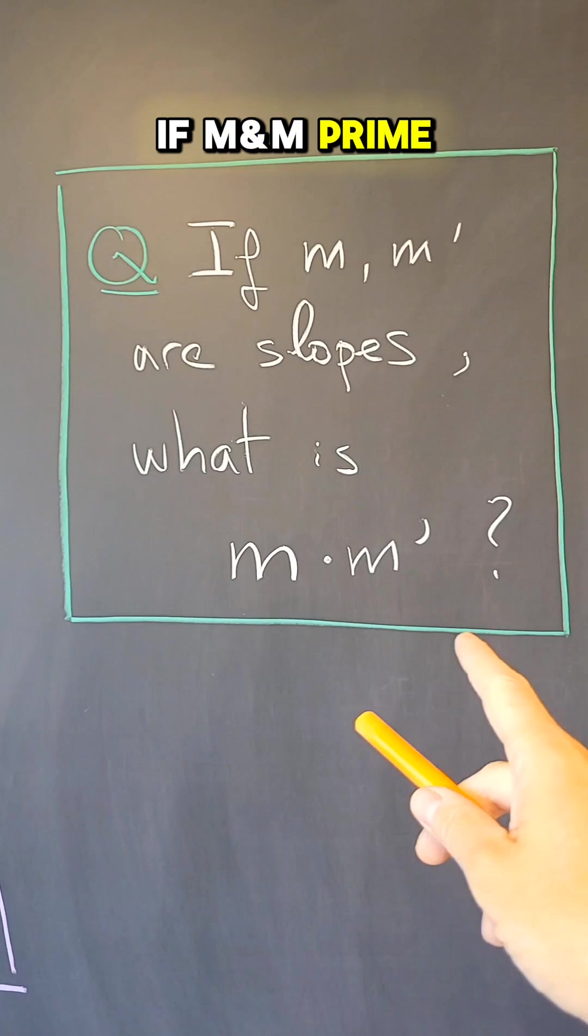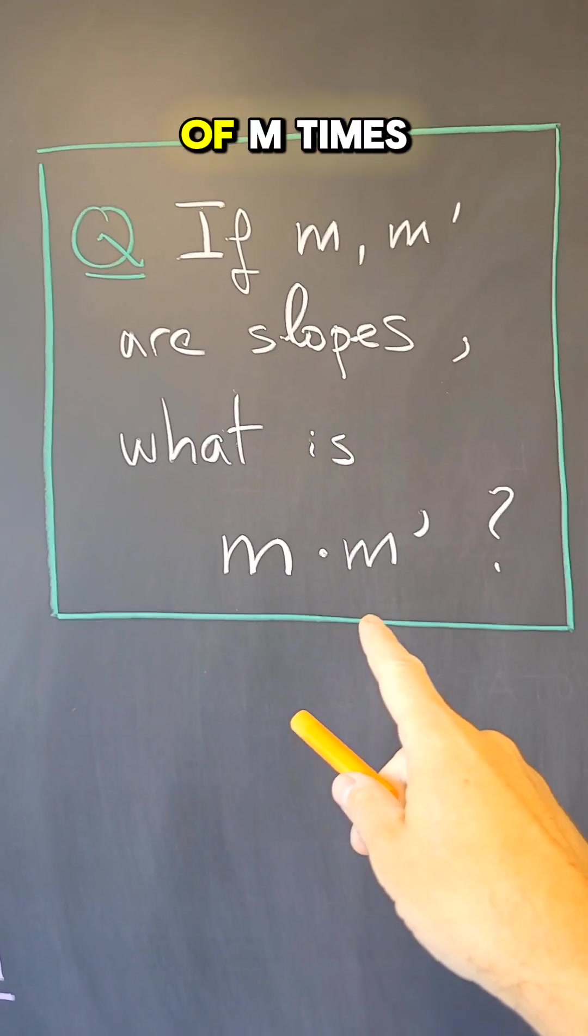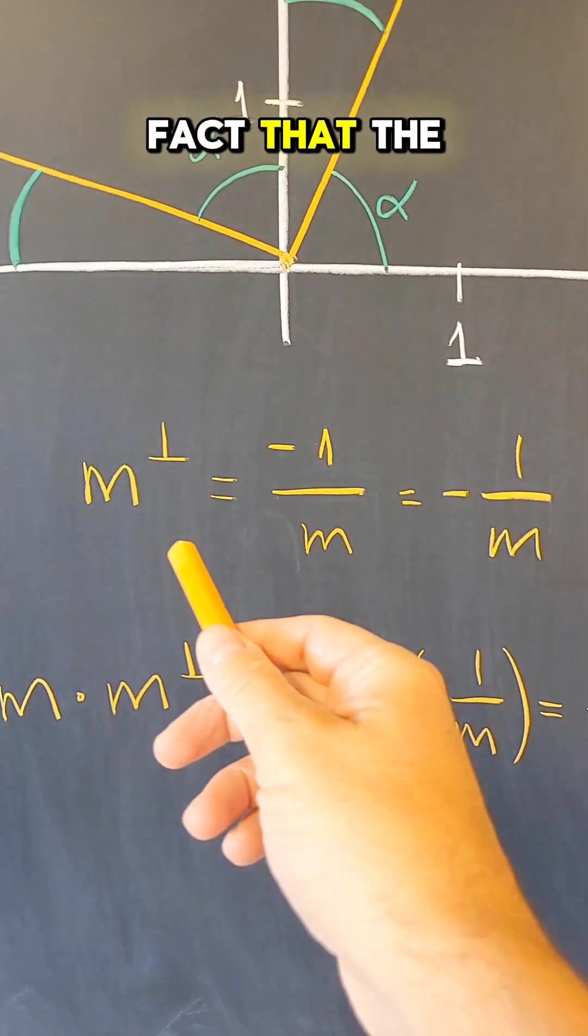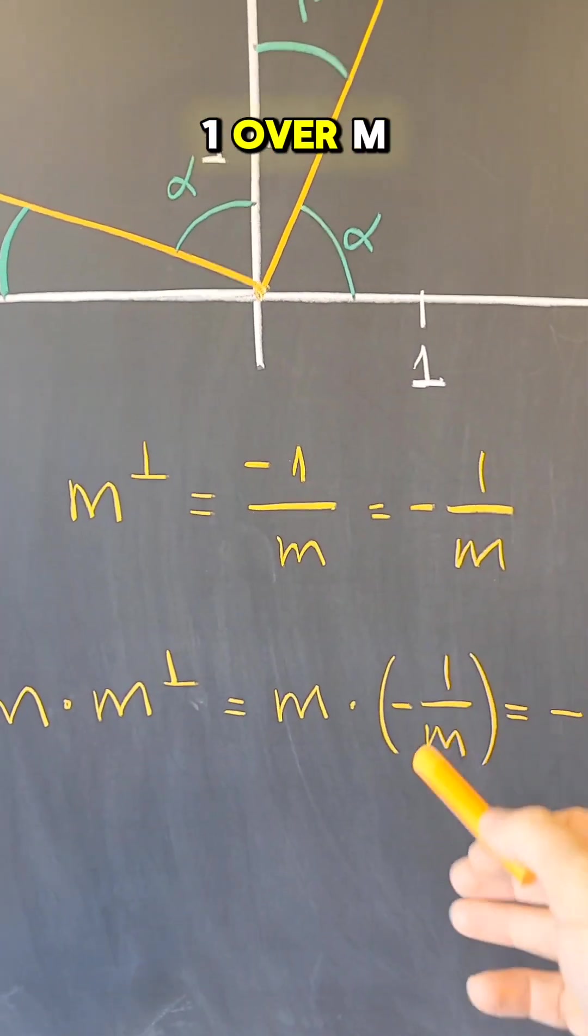If m and m' are slopes, what is the value of m times m'? Let me first give a geometric proof of the fact that the perpendicular slope is minus one over m.